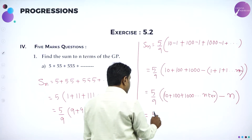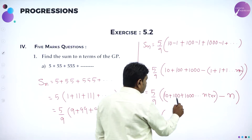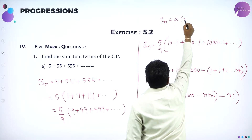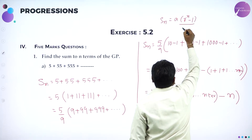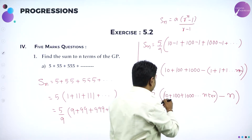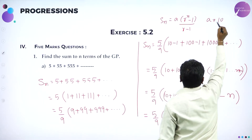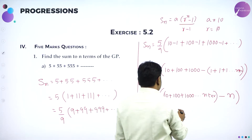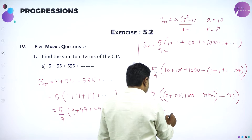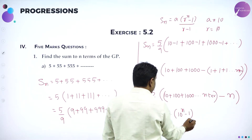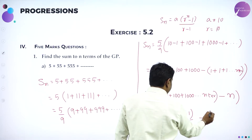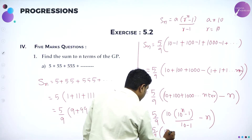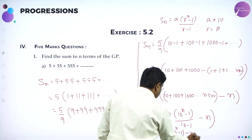Now further I can write it as 5 by 9. For 10, 100, 1000 in GP: the sum of n terms in GP is Sn = A × (R^n − 1) / (R − 1) when R > 1. First term A is 10, common ratio R is also 10. Substituting: 10 × (10^n − 1) / (10 − 1), minus n. So the final answer is 5/9 × [10/9 × (10^n − 1) − n].